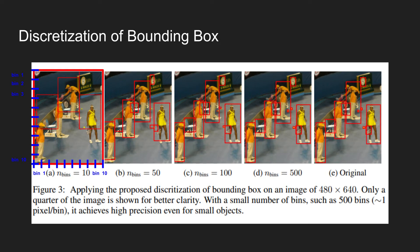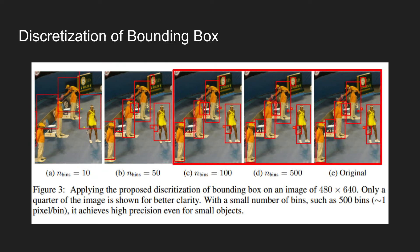However, setting a small number of bins will limit capturing the location of the objects as we can see in figures A and B. However, we could increase the number of bins and when the number of bins increases to 50 or 500, we can see that it's able to capture objects with high precision.